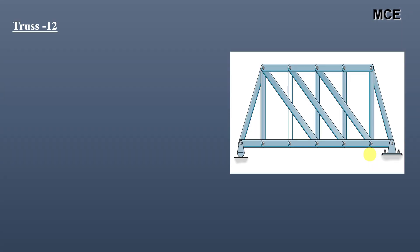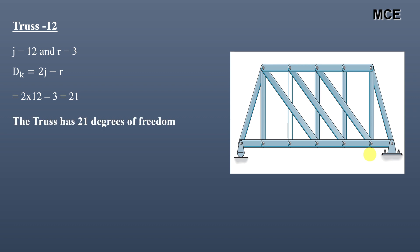For truss twelve, this truss has 12 joints and three reactions. The value of dk comes out to be 21, meaning this truss has 21 degrees of freedom.